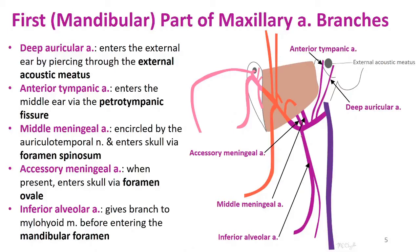The last branch of the first part is the inferior alveolar artery, the only one coursing inferiorly toward the mandibular foramen to enter the mandible. It gives off a small branch to the mylohyoid muscle before entering the mandibular foramen, where it supplies the mandibular teeth and then the chin and lower lip as it becomes the mental artery.